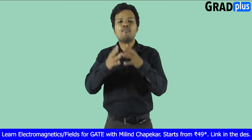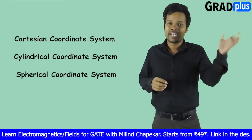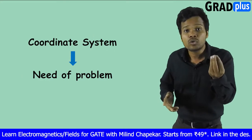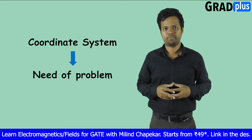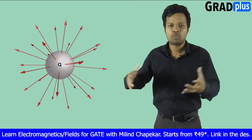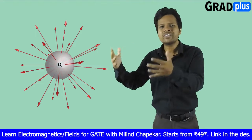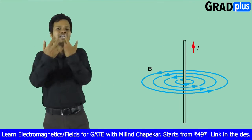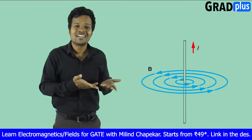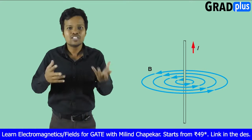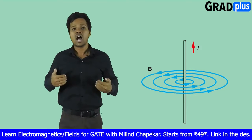Electromagnetics is the study of waves and fields. While studying EMT, the most commonly used coordinate systems are Cartesian, cylindrical, and spherical. We use the coordinate system according to the need of the problem. For example, if you are calculating flux coming out of a spherical charge, you would use the spherical coordinate system. If you are finding electric field intensity due to a line charge, the preferable coordinate system would be cylindrical.